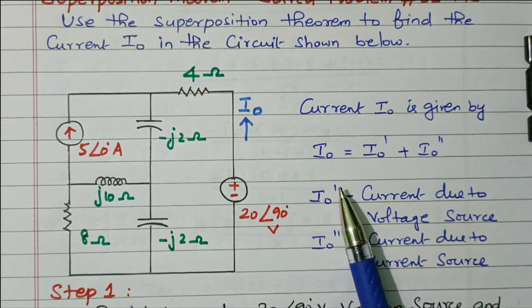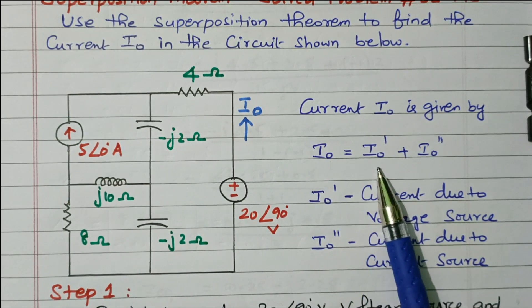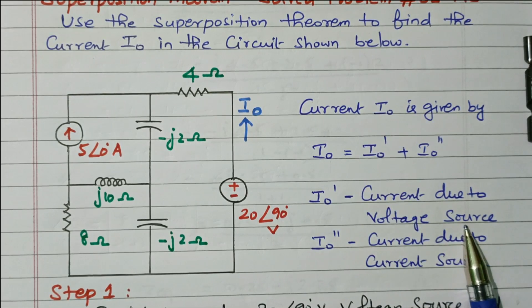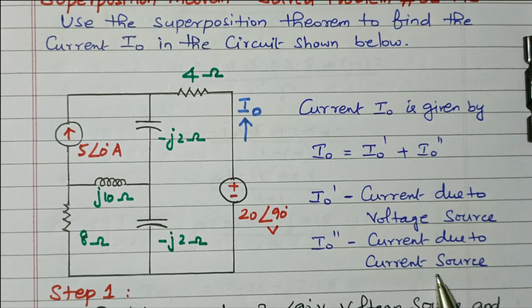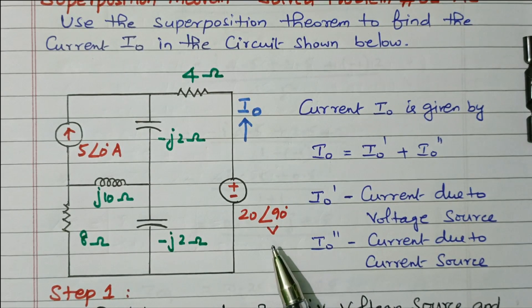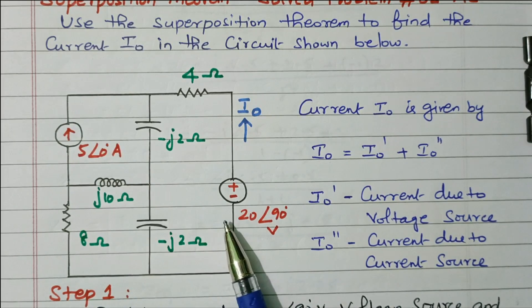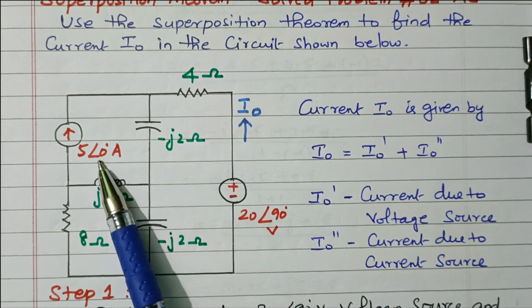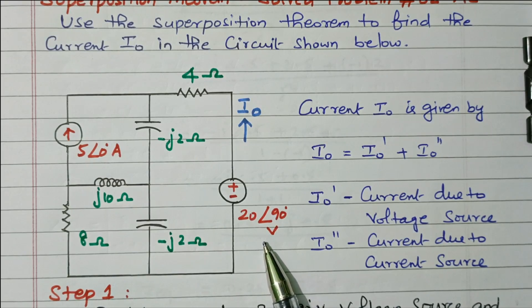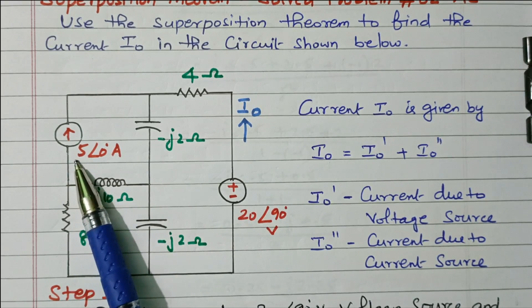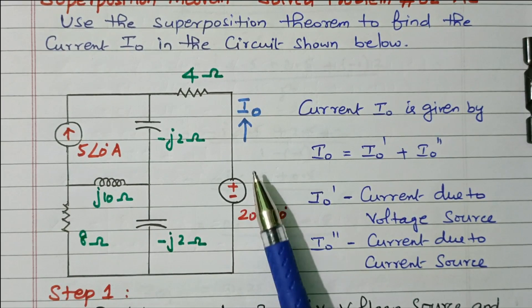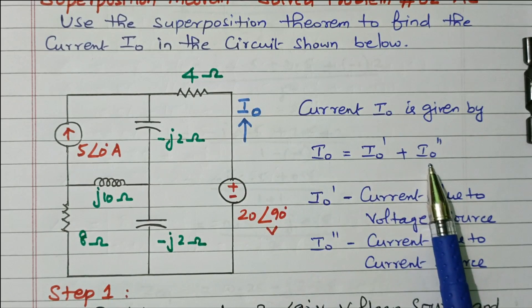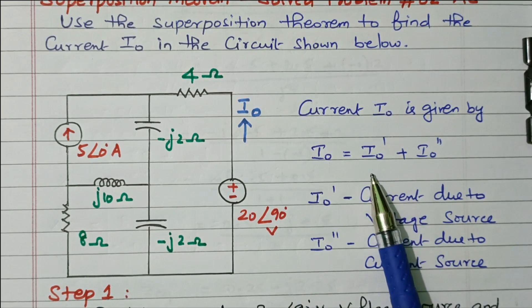Based on the superposition theorem, the current I₀ equals I₀ dash plus I₀ double dash. I₀ dash is the current due to the voltage source alone, and I₀ double dash is the current due to the current source alone. First we consider only the current source and remove the voltage source by short circuit, then consider only the voltage source and remove the current source by open circuit. The total current is the sum of both — that is the principle of the superposition theorem.